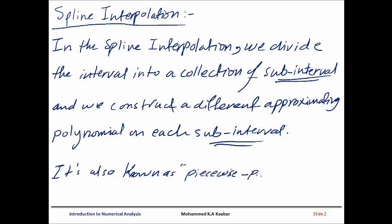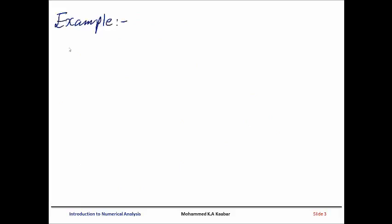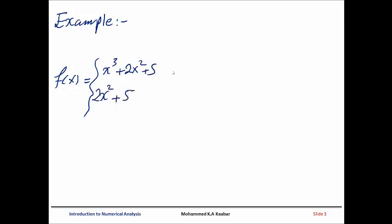It is known as piecewise polynomial approximation. For example, if you have f(x) = x³ + 2x² + 5 and x² + 2x² + 5 — these are two different polynomials on two different pieces.